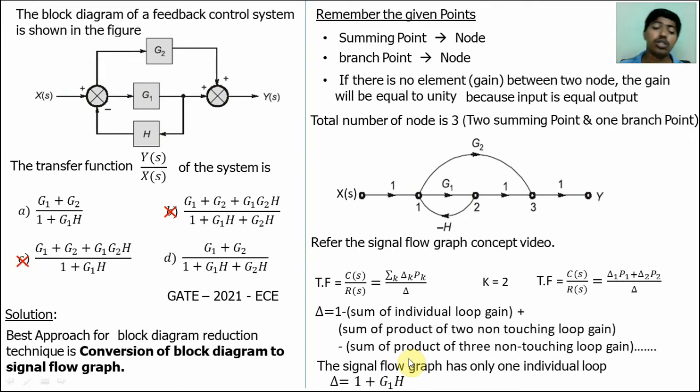The denominator term should be 1 plus G1H. Compare this option. Option A have the denominator 1 plus G1H. But the option D have 1 plus G1H plus G2H. So option D is wrong. Option A is correct. Just try this problem using signal flow graph fully. You can get this answer option A. The best tricks for the block diagram to signal flow graph is only the conversion of block diagram to signal flow graph.